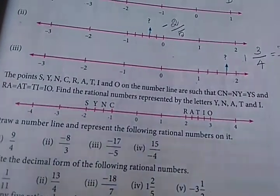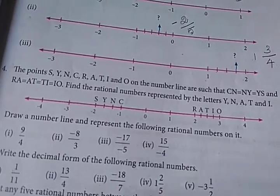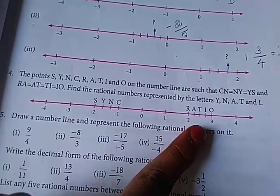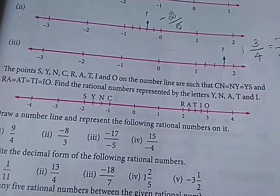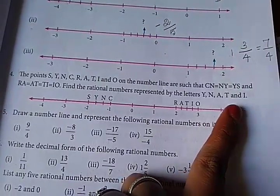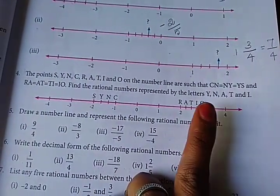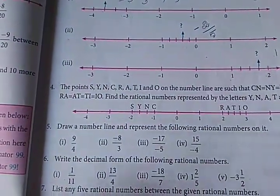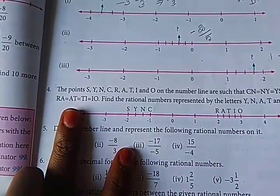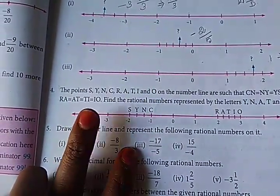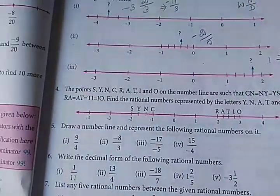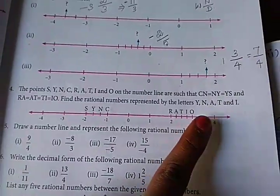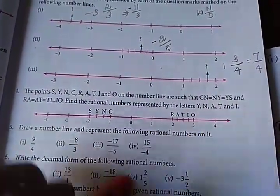So how to get the points? On the number line, the points are S, Y, N, C, R, A, T, I, O. The letters we need to find are Y, N, A, T, and I.